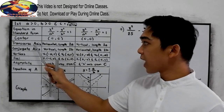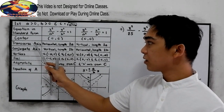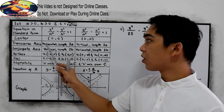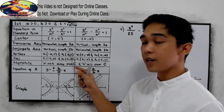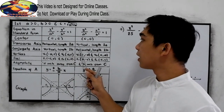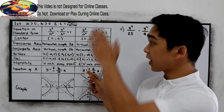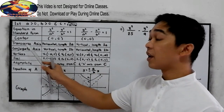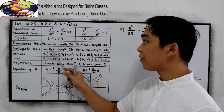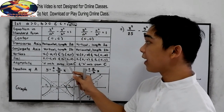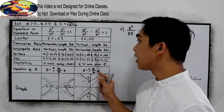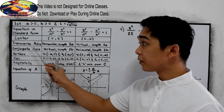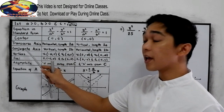For the transverse axis: in the first form it is horizontal with length 2A, and in the second form it is vertical with length 2A. For the conjugate axis: in the first form it is vertical with length 2B, and in the second form it is horizontal with length 2B. The transverse and conjugate axes are perpendicular to each other.